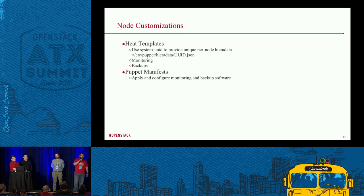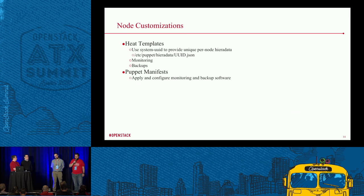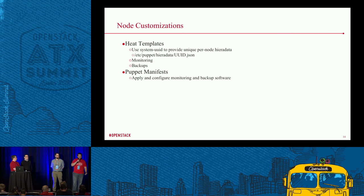In order to back up and proactively monitor the environment, we've taken advantage of heat templates along with Puppet manifests. What we do is specify per-node configurations using the system UUID, which effectively writes a UUID.json HieraData file with per-node-specific data that we can then use to assign additional IPs and properly install our monitoring and backup software. And then Puppet applies it.